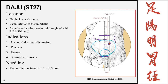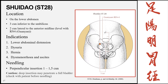Shuidao, Stomach 28, is on the lower abdomen, 3 cun inferior to the umbilicus — the third division down — and 2 cun lateral to the midline. Indications include lower abdominal distension, dysuria, hernias, dysmenorrhea, and ascites. Insertion is perpendicular, 1 to 1.5 cun. Caution: deep insertions may penetrate a full bladder. Always check that the patient does not need to urinate, as a full bladder enlarges and greatly increases the risk of puncture.